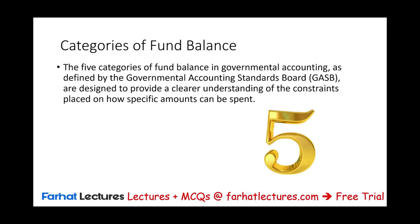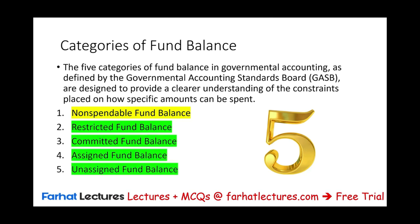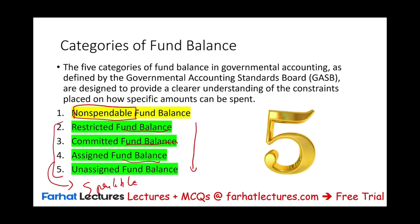GASB defined five categories to help us understand the restriction on these specific amounts: non-spendable fund balance, restricted fund balance, committed fund balance, assigned fund balance, and unassigned fund balance. Non-spendable is highlighted separately because categories two through five are spendable — you can spend them. So you can break these categories into one non-spendable and four spendable. Within the spendable, they are listed from most restricted to least restricted: restricted is most constrained, committed is less restricted than restricted, assigned is less restricted than committed, and unassigned is not restricted in any way.